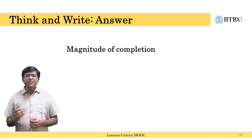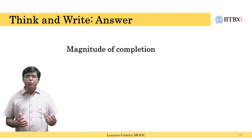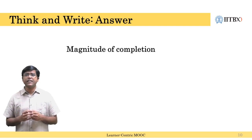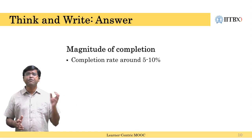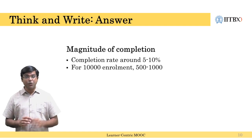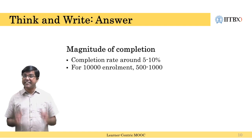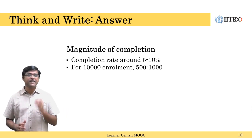As evident from the graph, when enrollments are greater than 10,000, the completion rates are maximum between 5 to 10 percent. This means that for a course of 10,000 learners, roughly 500 to 1,000 people completed the course.